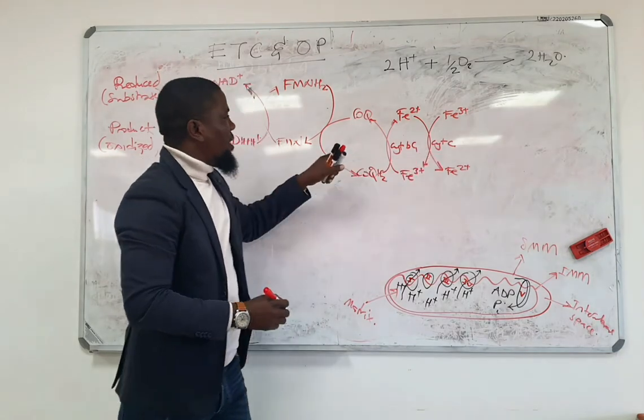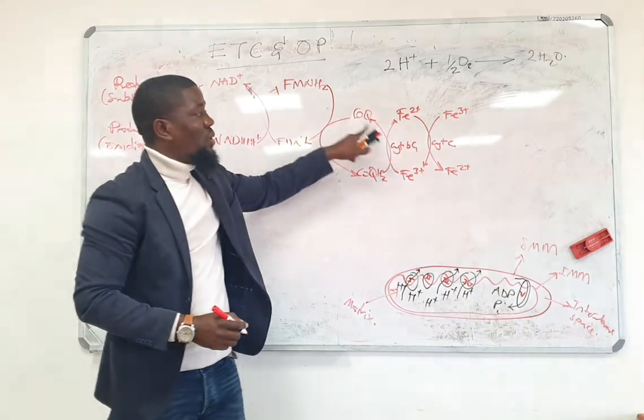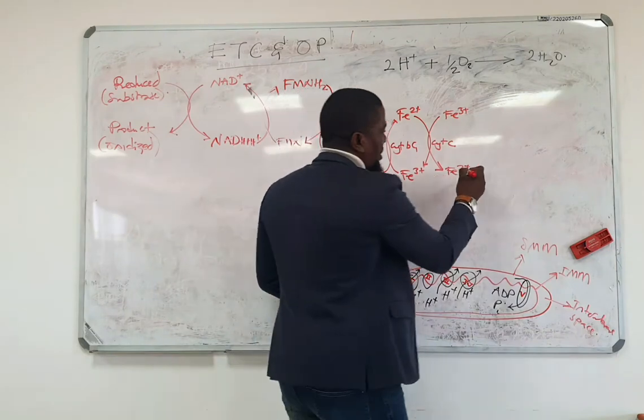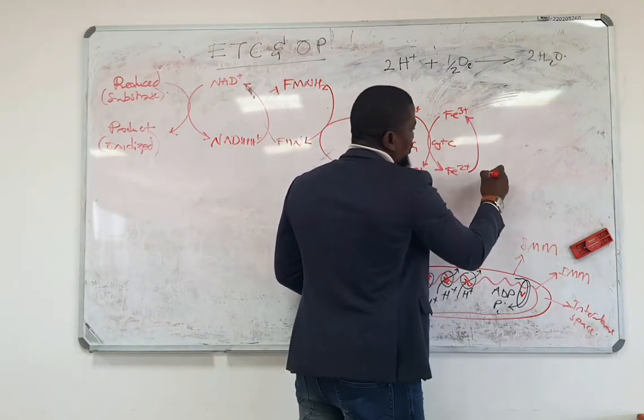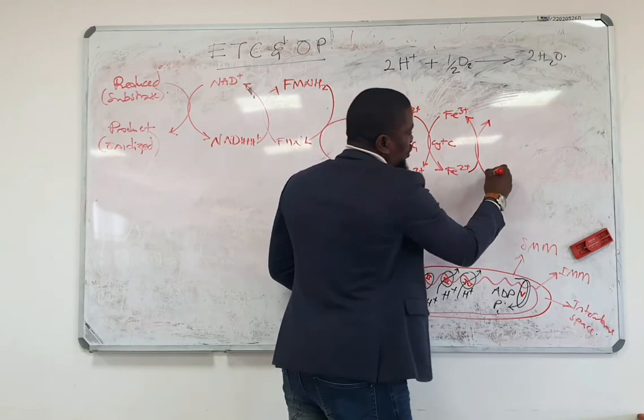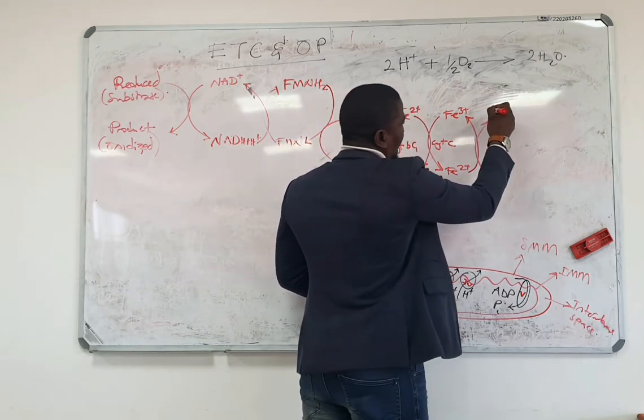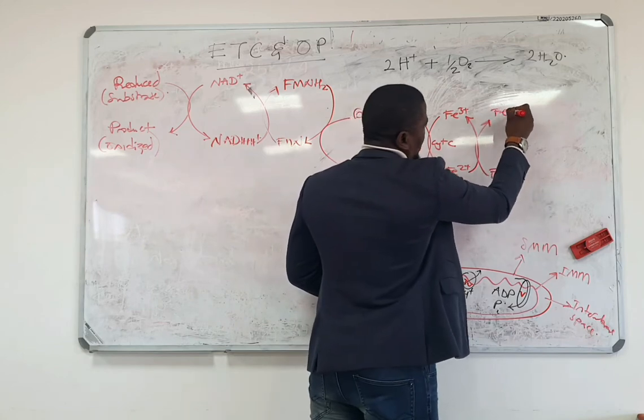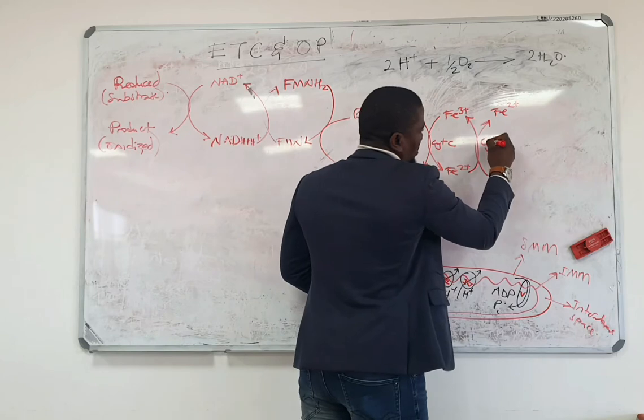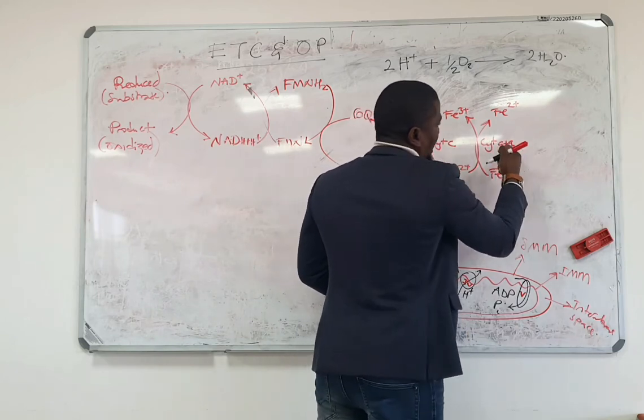Cytochrome C like coenzyme Q is also a mobile coenzyme. The next reaction is this reduced cytochrome C, the iron would reduce the iron which is on cytochrome oxidase. Cytochrome oxidase which is referred to as A plus A3.